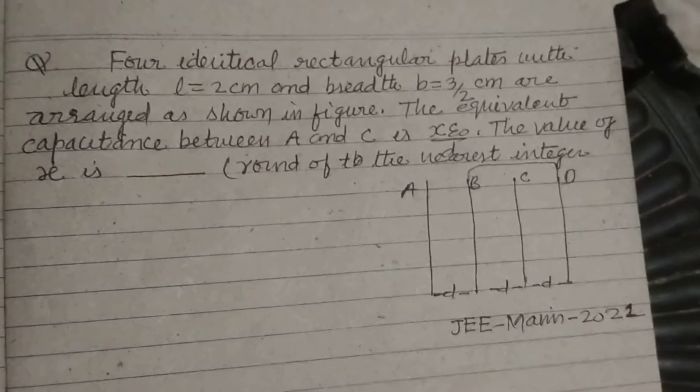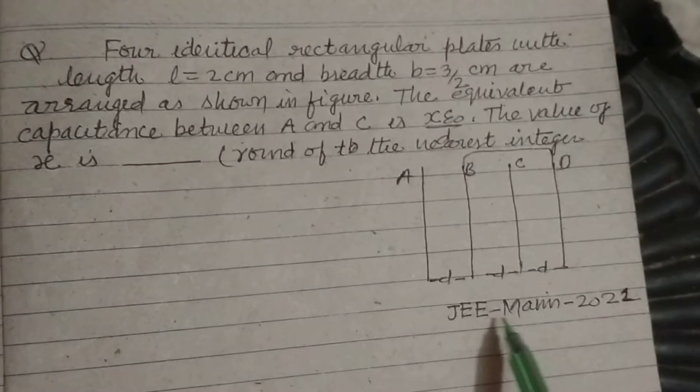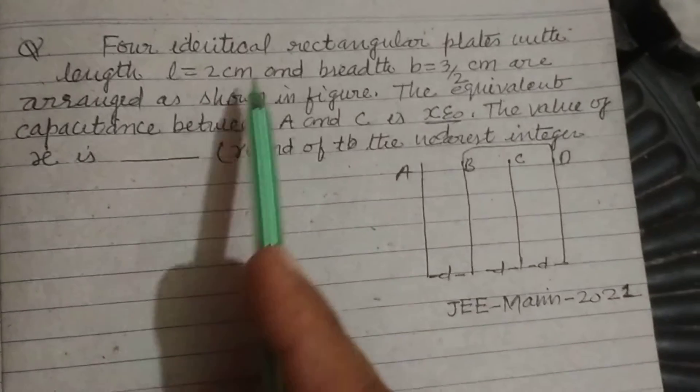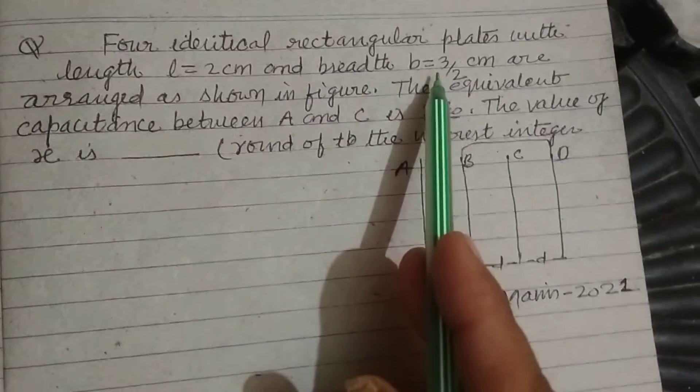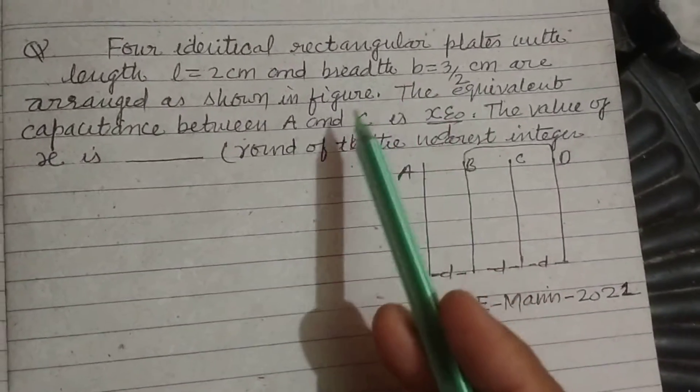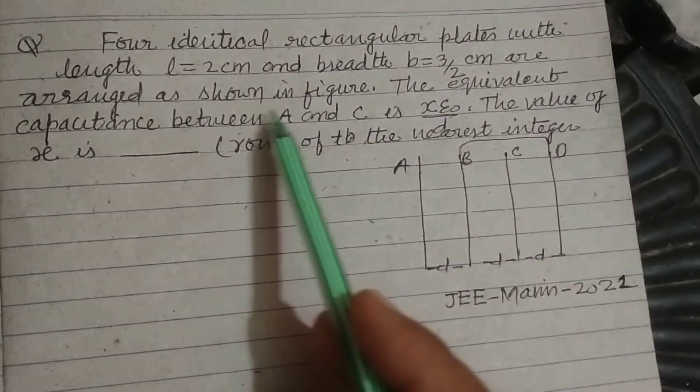Hello student and warm welcome to this YouTube channel. Question from JEE-Mains 2021: Four identical rectangular plates with length L equal to 2 cm and breadth b equal to 3 by 2 cm are arranged as shown in figure.